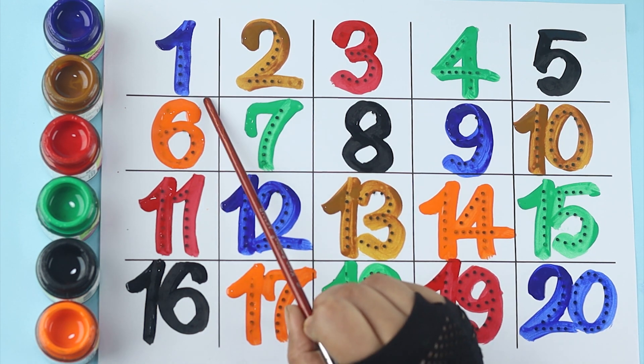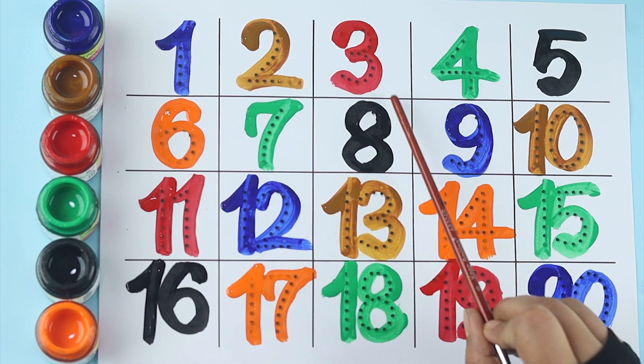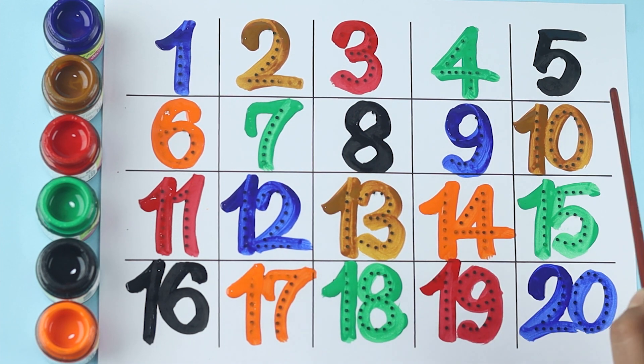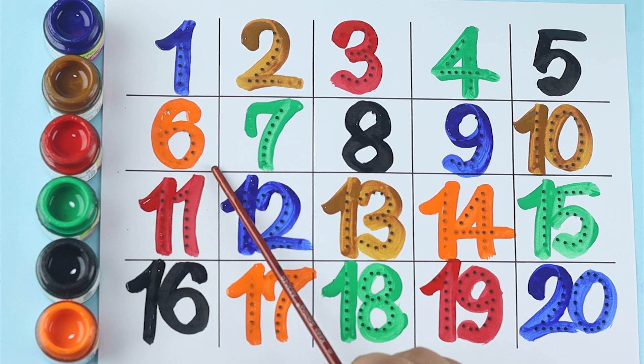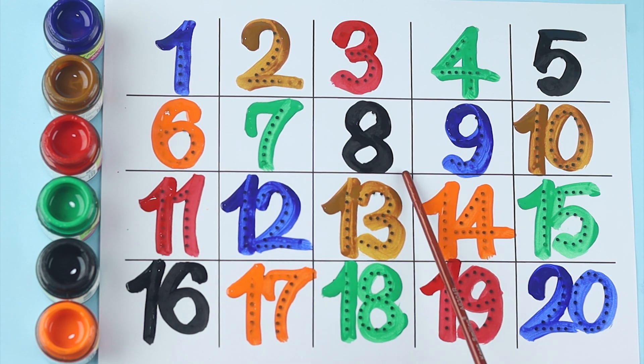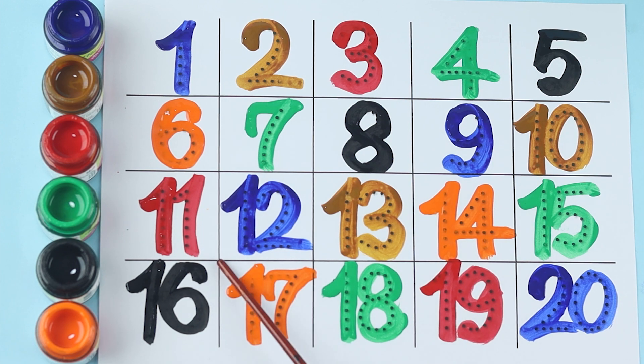One, two, three, four, five, six, seven, eight, nine, ten, eleven, twelve, thirteen, fourteen, fifteen, sixteen, seventeen, eighteen, nineteen, twenty. Thank you.